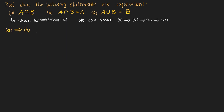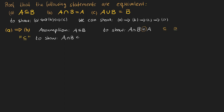For the first sub-proof we will show that A implies B. Therefore we assume that A is a subset of B, and under this assumption we need to show that the intersection of A and B is equal to A. Whenever we prove an equality of sets, we show that the left side is a subset of the right side and the right side is a subset of the left side. Usually we wouldn't have to show that the intersection of A and B is a subset of A, because it is obvious, but we will show it anyway.